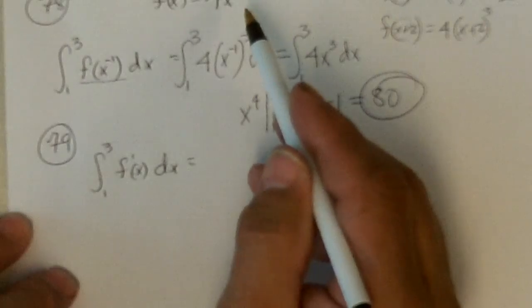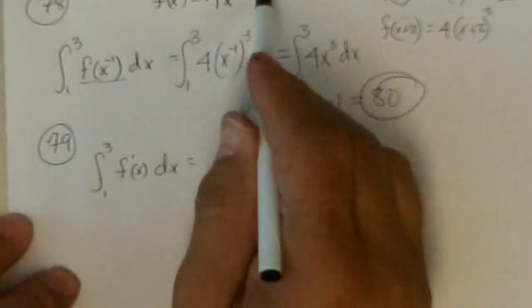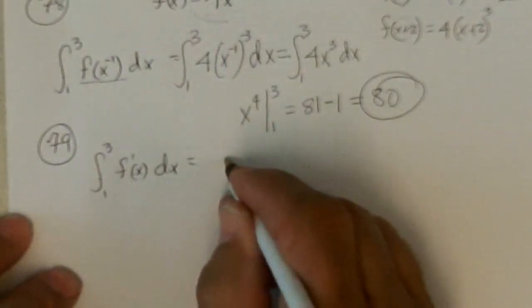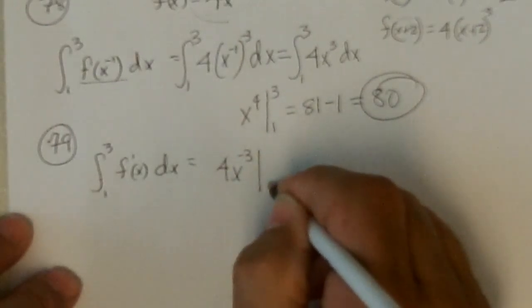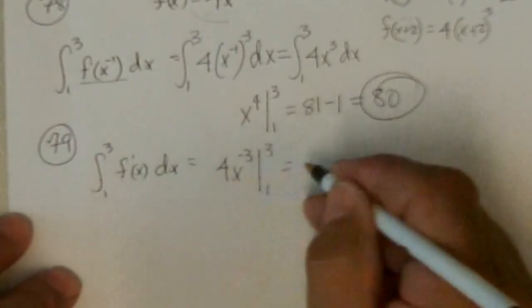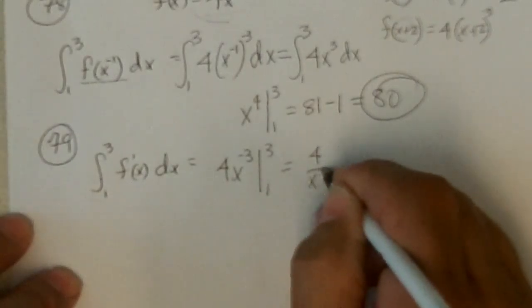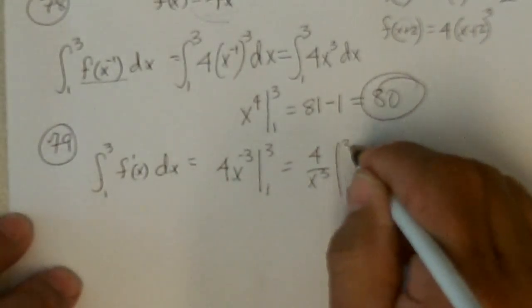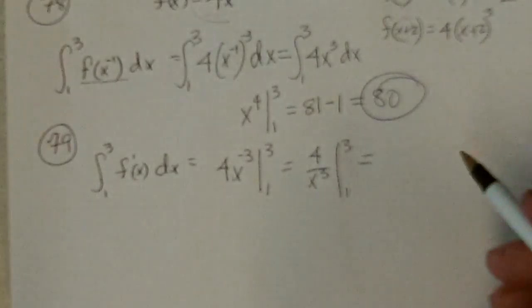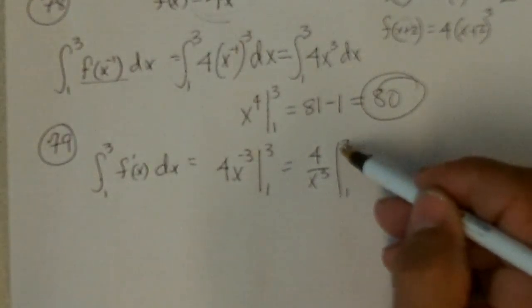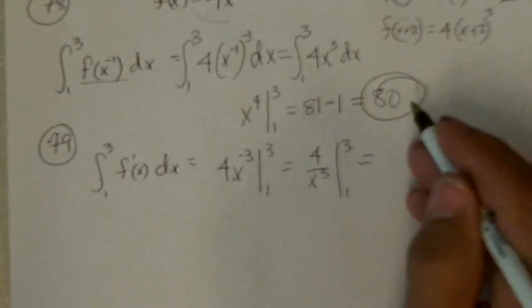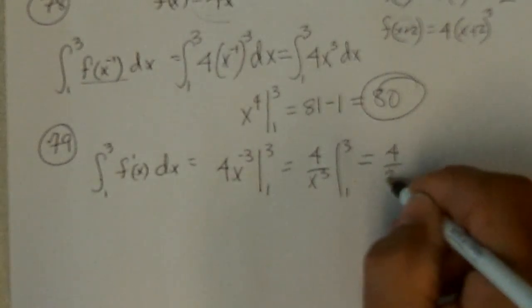And 79. It says find the anti-derivative of the derivative of this. Well, the derivative of this would be negative 3 times this to the negative 4. And the anti-derivative would take us right back to this. So we're just evaluating 4x to the minus 3 from 1 to 3, which is really 4 over x to the 3rd from 1 to 3.